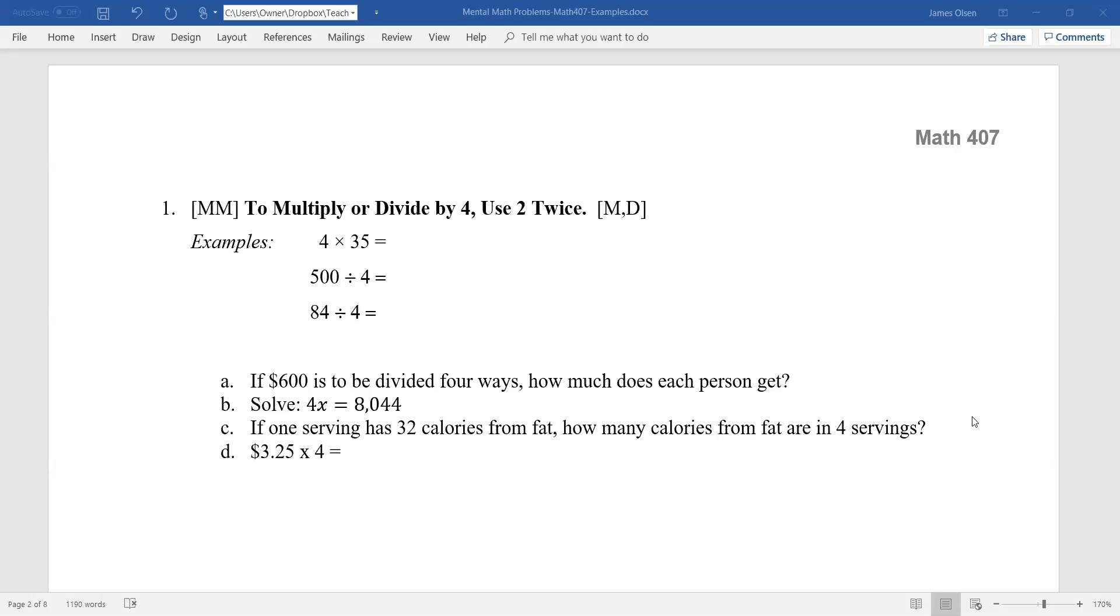This is the mental math strategy to multiply or divide by four, use two twice. Let's take four times 35. Well, we're going to multiply by two twice. 35 doubled is 70, and 70 doubled is 140. So my answer is 140.